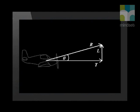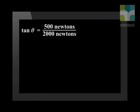Let's use the tangent ratio, which is the opposite side over the adjacent side. Tan theta is 500 newtons divided by 2,000 newtons, which is 0.25. And this is a pure number. It has no units. Using the inverse function on your calculator, you find that theta is 14 degrees.